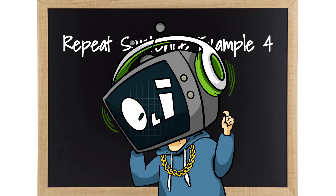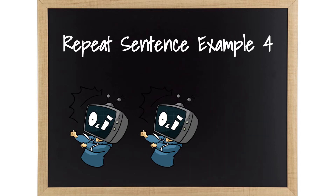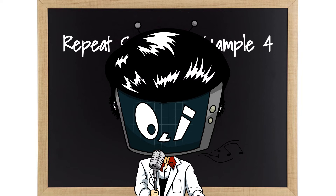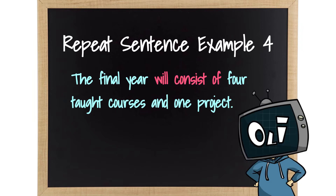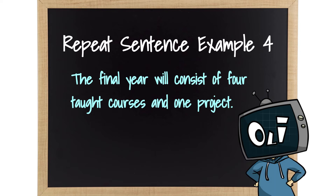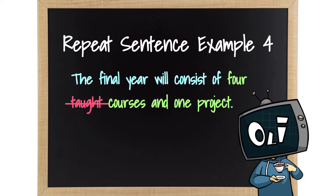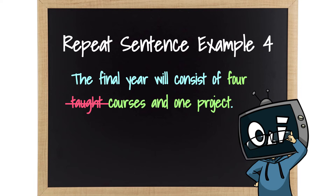Let's start the fourth question. [Audio plays] The final year will consist of four taught courses and one project. This sentence brings back such horrid memories of my last year in college, particularly that one project. This sentence has a future normal tense, but many students might miss that and drop the 'will.' As long as you get the consistent part right, that's fine. Students might also leave out 'taught' and go with 'four courses and one project' — leaving out 'taught' actually gives the whole parallelism a nice symmetry.